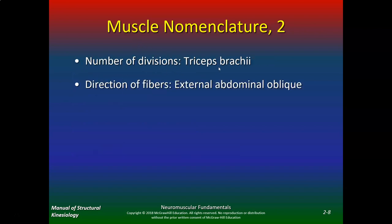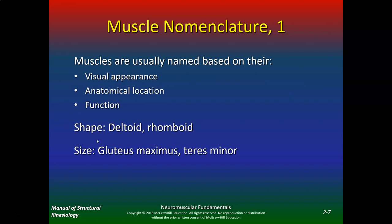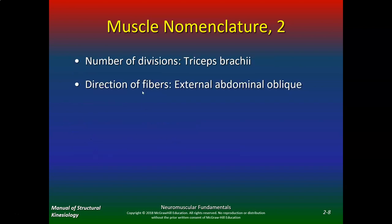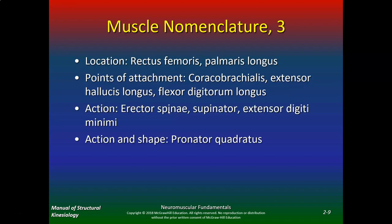How many divisions does it have? Triceps meaning three, biceps meaning two. What's the direction of the fibers — are they external abdominal obliques? All these muscles are named for a reason, whether it's their shape, size, number of divisions, or direction of fibers. The name of the muscle will tell you a lot of information. Location: rectus femoris — we know that's the femur. Palmaris longus — that's near your palm.